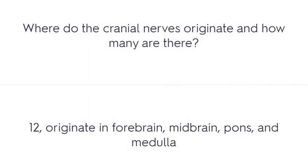Where do the cranial nerves originate and how many are there? Twelve originate in the forebrain, midbrain, pons, and medulla.